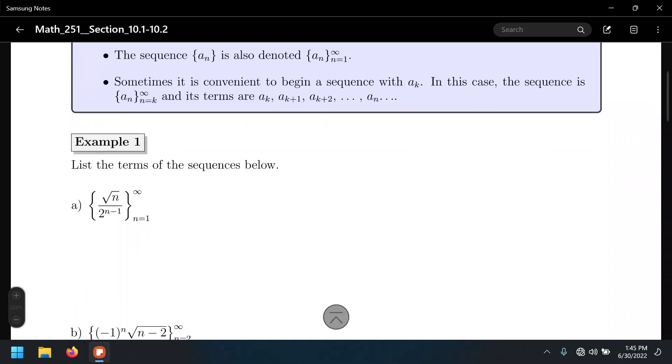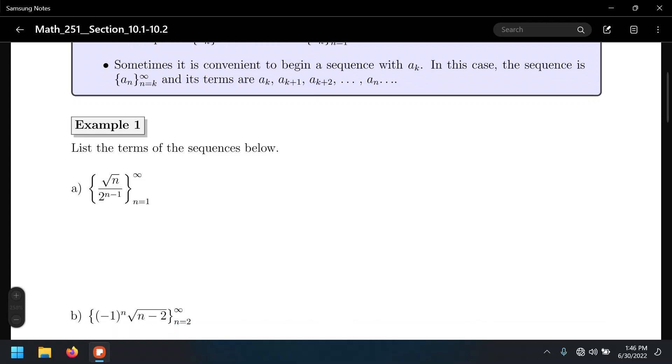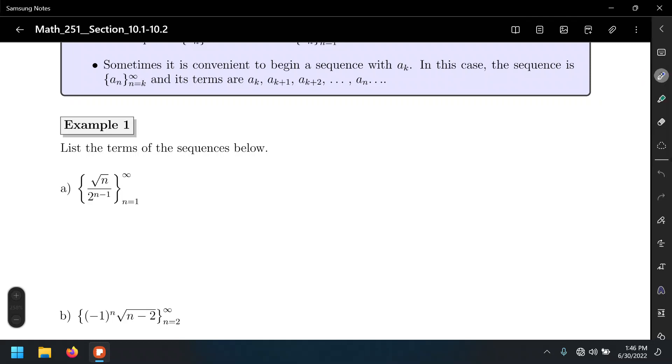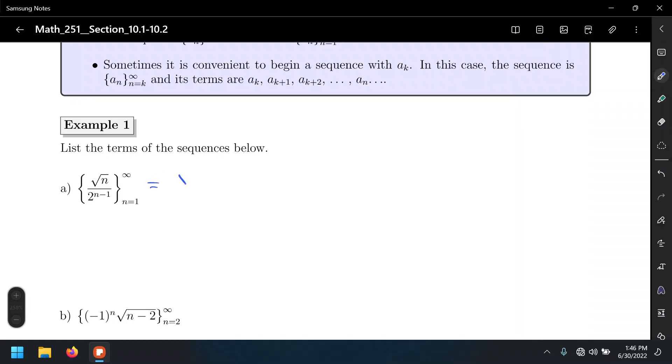What we're going to do for now: let's just list the terms of these sequences. All we do is plug in numbers. In this case, list the term, just a few, maybe just three. So, in this case, that's the square root of 2 to the 1 minus 1, the square root of 2 over 2 to the 2 minus 1, the square root of 3 over 2 to the 3 minus 1.